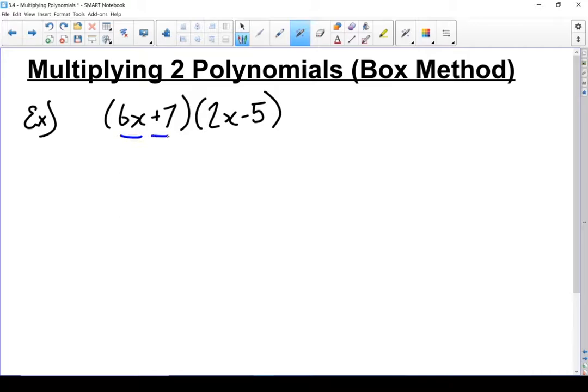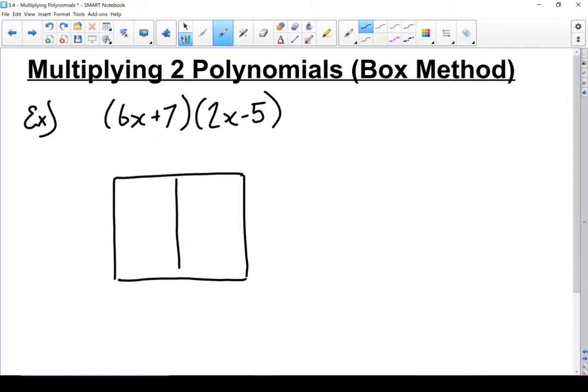So I have two binomials, so each of my polynomials in this case has two terms. So I'm going to do a 2x2 box. Next we're going to write our terms out. So across the top, I'm going to go 6x plus 7, one term for each column, and then we're going to take the other one and put it along the side, one term for each row. It doesn't matter which one you put on the top and which one you put on the side, it just has to have enough boxes to match the number of terms you've got.